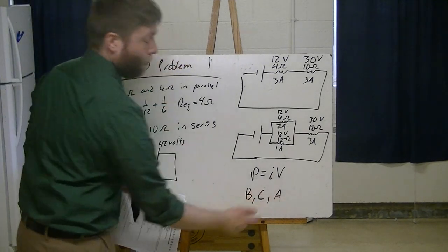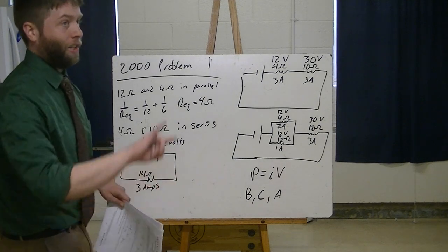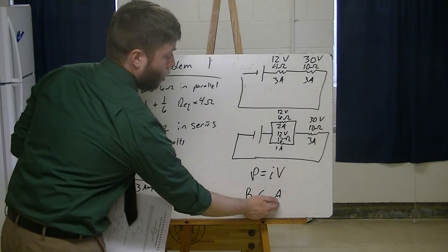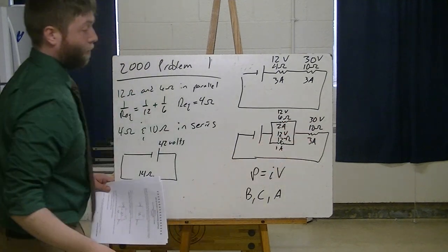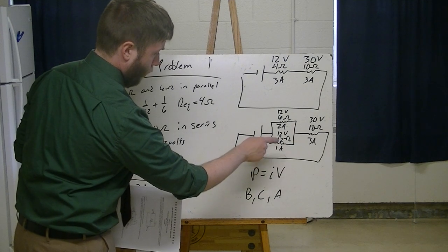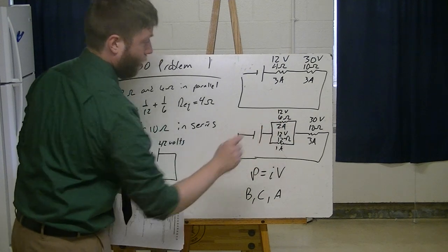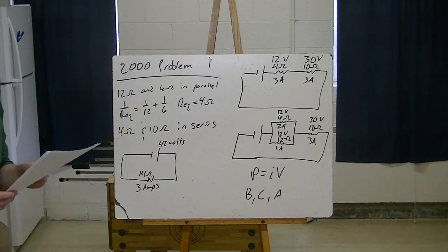It should be pretty clear that light bulb A is the brightest. I went least bright to bright, so please flip it. The most bright light bulb is A because it's going to be 30 volts multiplied by 3 amps. Then we go to C. The C is going to be the 12 volts multiplied by the 2 amps. And then B is going to be the 12 volts multiplied by the 1 amp.